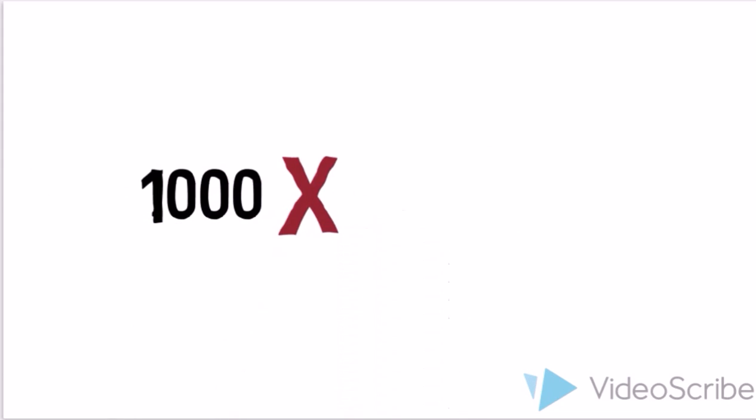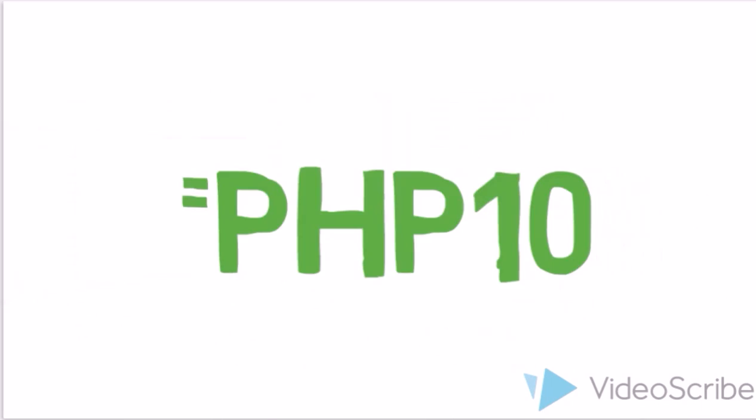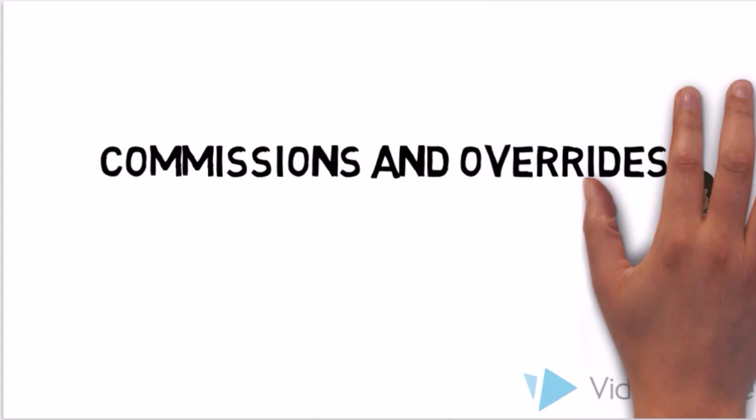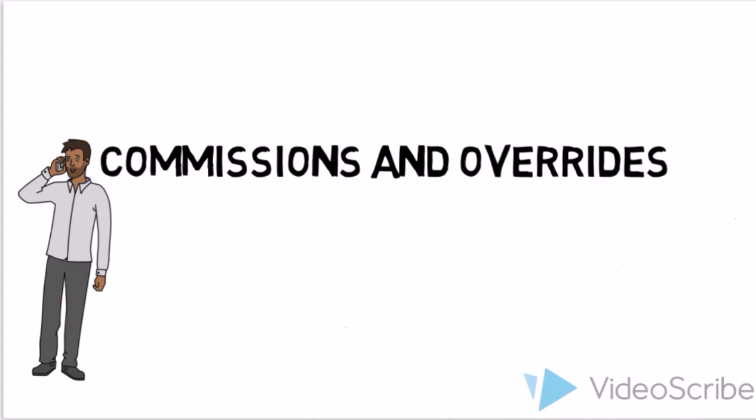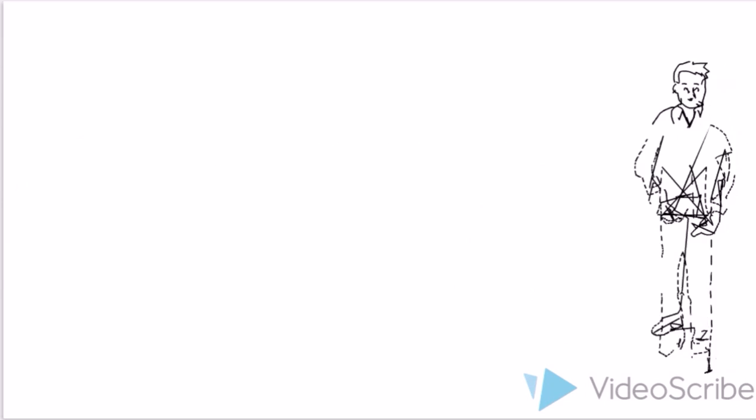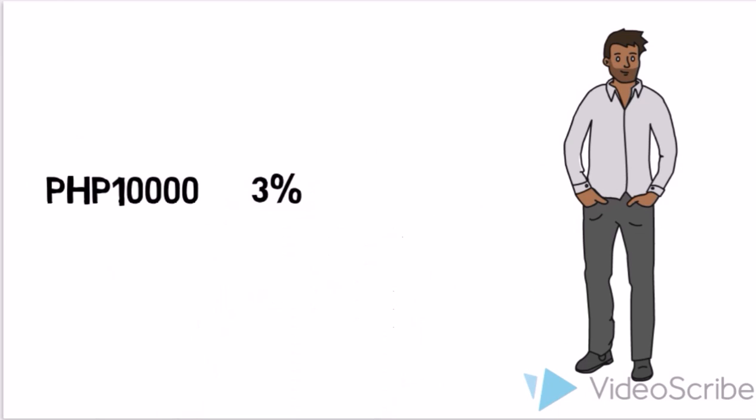Commissions and overrides: salesmen, agents, and brokers are generally paid commissions as incentives for increasing a firm's sales. If a sales agent earns a basic monthly salary of 10,000 pesos and is paid a 3% commission on all of his sales for the month, he will have a gross earning of basic salary plus commission.